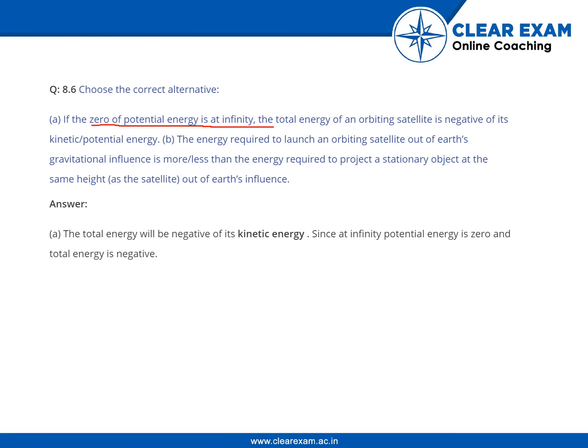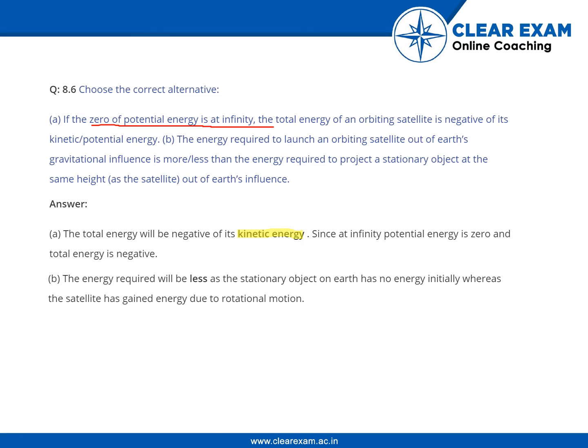For part A, the total energy is negative because of its kinetic energy. Since at infinity the potential energy is zero, the total energy is negative. For part B, the energy required is less. A stationary object at rest has no initial energy, whereas the satellite has already gained energy due to its rotational motion.